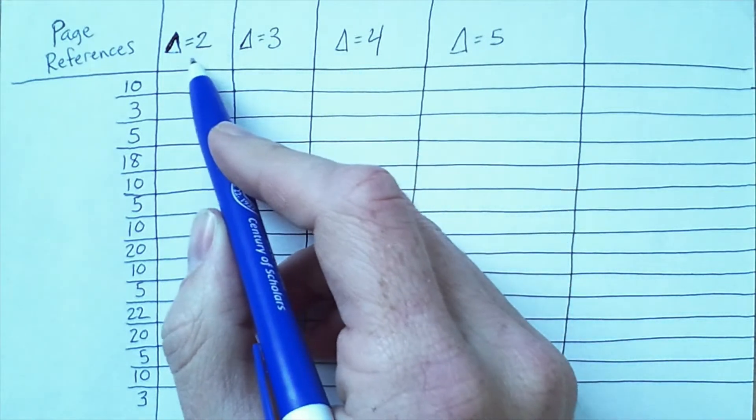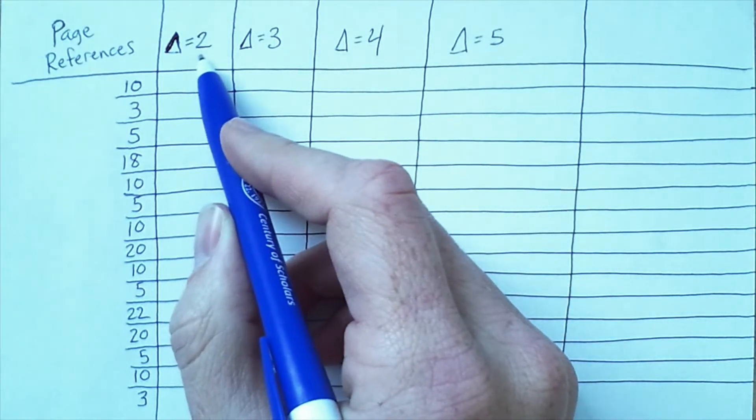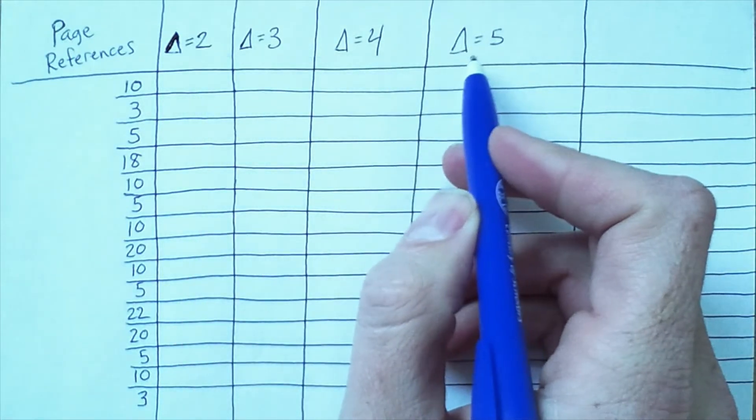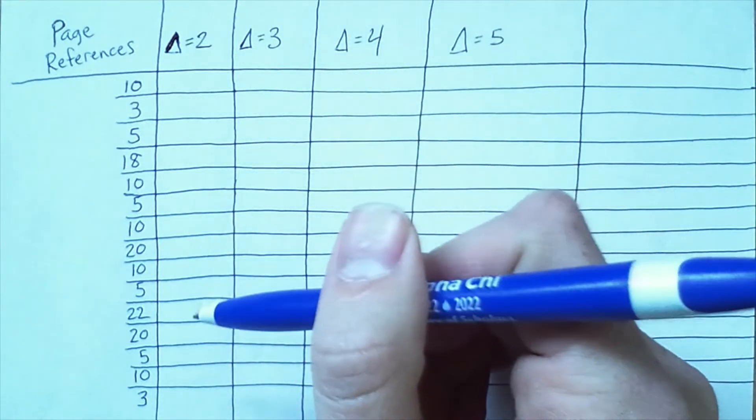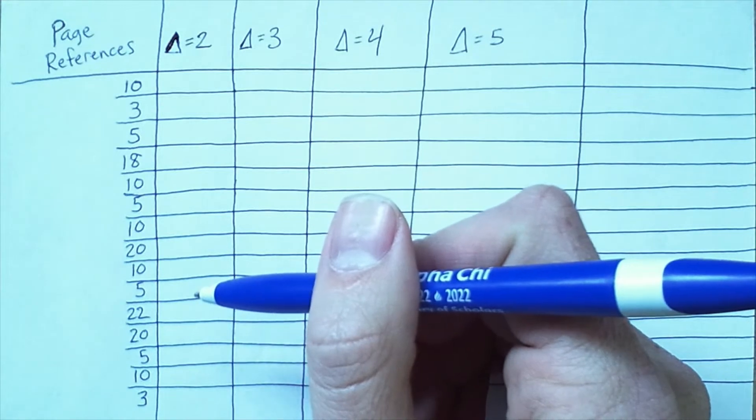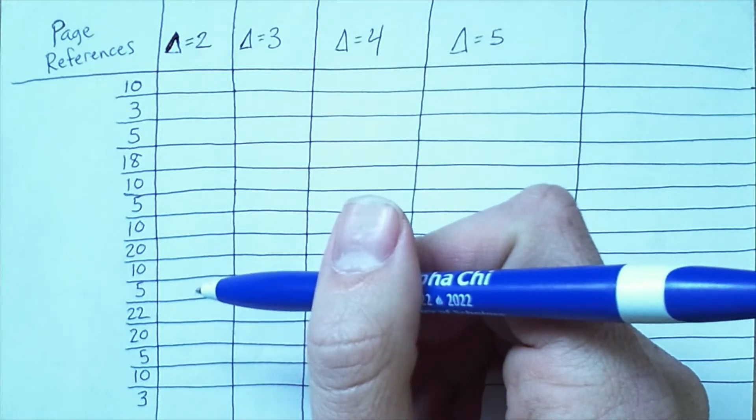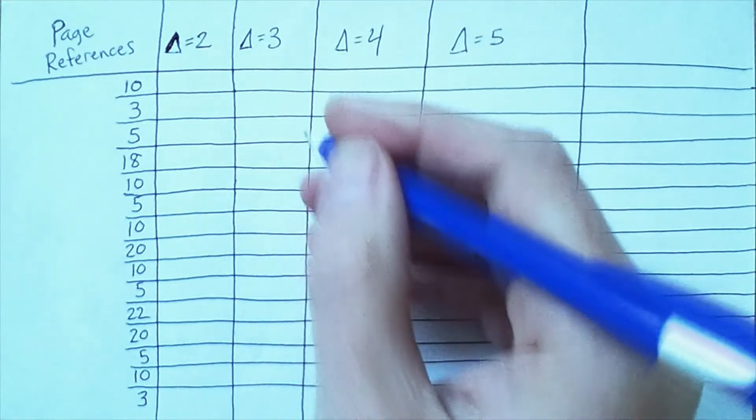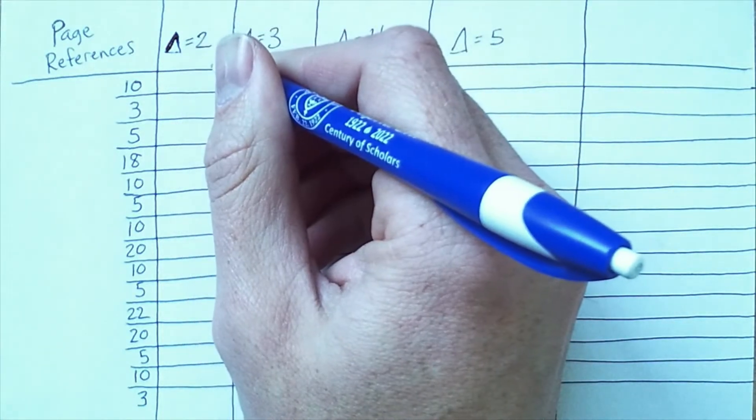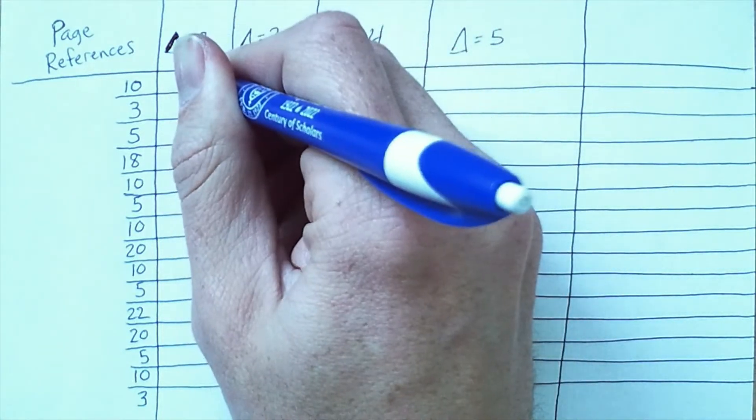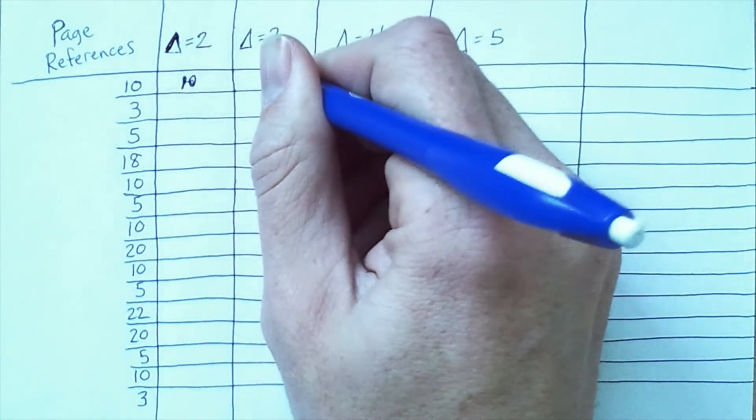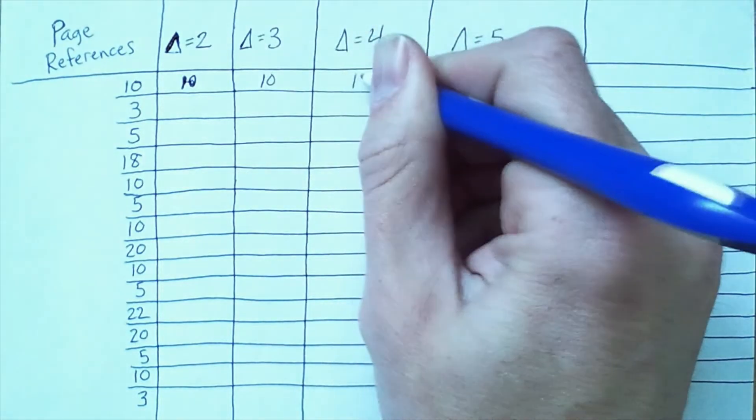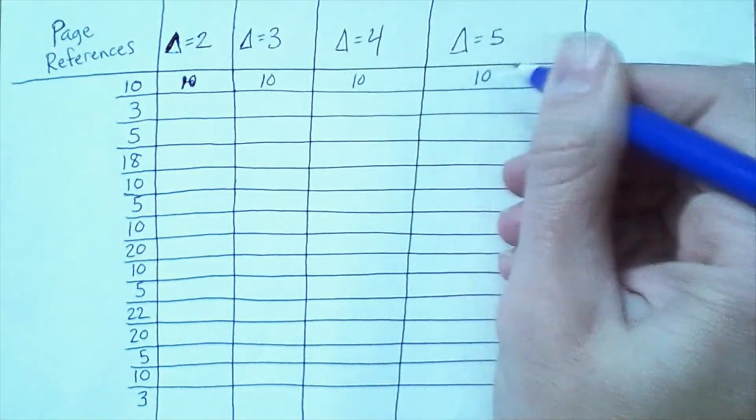Here on the left we have a sequence of page references. So as we go down, we're also advancing the time, because at each time step we're referencing a new page. And each of these columns will contain the results, or rather the members of the working set for different values of delta.